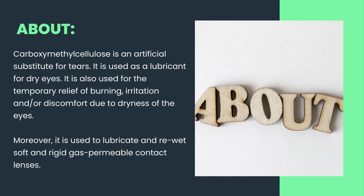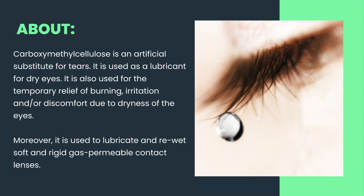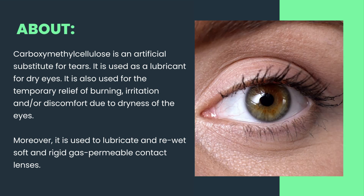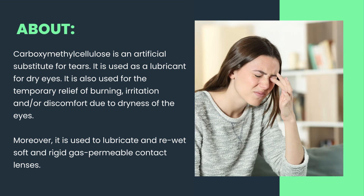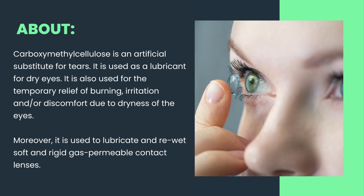About: Carboxymethylcellulose is an artificial substitute for tears. It is used as a lubricant for dry eyes. It is also used for the temporary relief of burning, irritation, and/or discomfort due to dryness of the eyes. Moreover, it is used to lubricate and rewet soft and rigid gas permeable contact lenses.